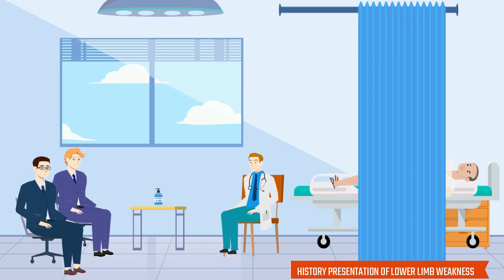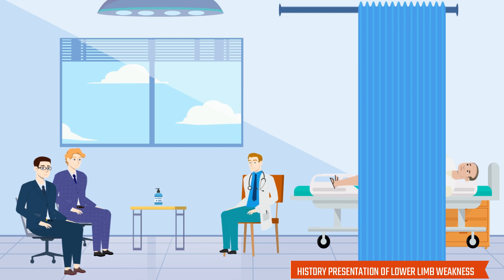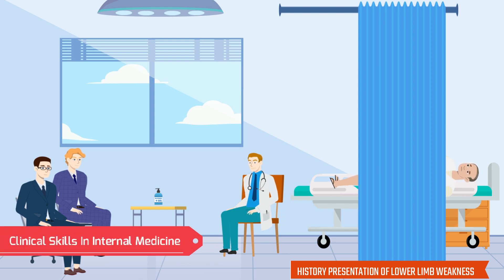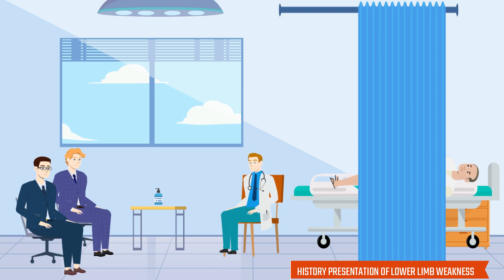There is no numbness or tingling sensation in the limbs. He complains of pain in the lower back. The pain is dull type and has no radiation, and it is relieved after taking paracetamol. There is no weakness in the upper limbs. He does not have any breathing difficulty or swallowing difficulty, and he has no visual abnormalities. Bowel and bladder habits are normal.